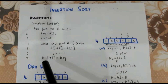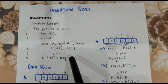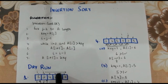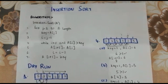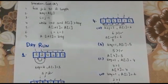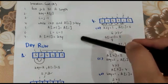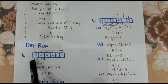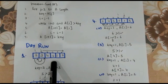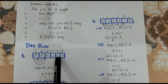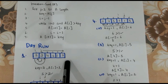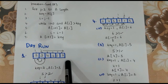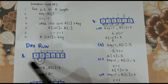This was the algorithm. Now we can understand it better through a dry run. In a dry run, we trace how the algorithm works step by step using pen and paper. We have a simple array given. The elements in the array are 5, 2, 4, 6, 1, and 3. We have to sort them in ascending order using insertion sort.